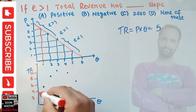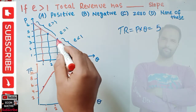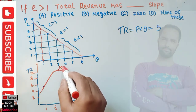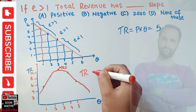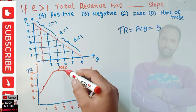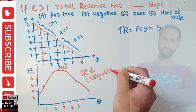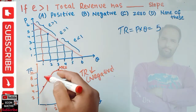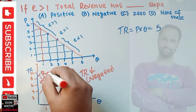Joining these points gives us the total revenue curve. When elasticity equals one, total revenue is at its maximum. When elasticity is less than one, total revenue decreases — meaning the total revenue curve has a negative slope. When elasticity is greater than one, total revenue has a positive slope.